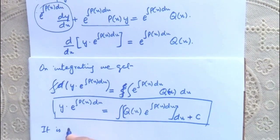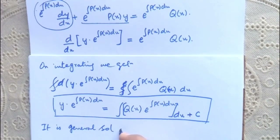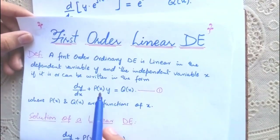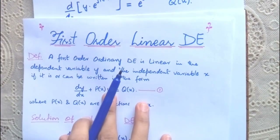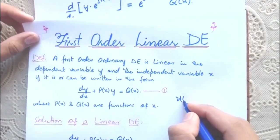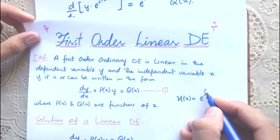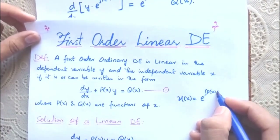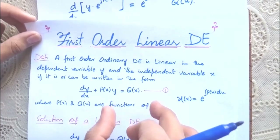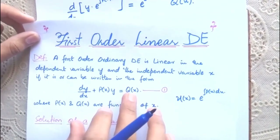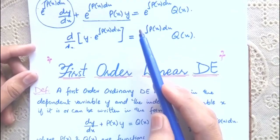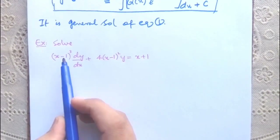This is the general solution. So if a differential equation is in this form, or can be written in this form, to solve it first find the integrating factor: μ(x) = e^(∫P(x)dx). Then multiply this integrating factor with equation 1, which gives an exact differential equation, and then apply this technique to get the general solution.